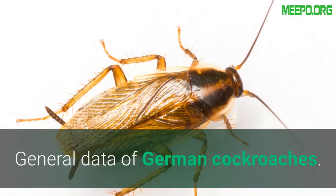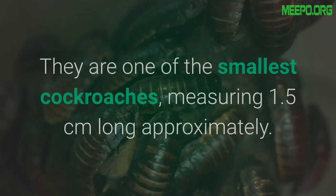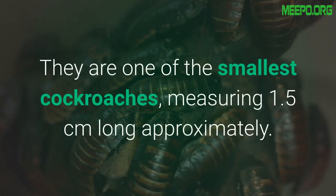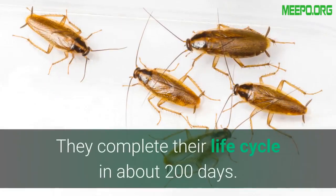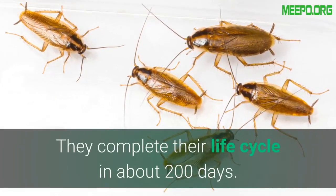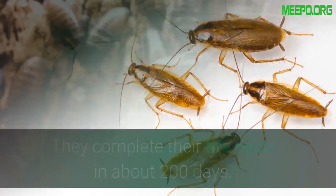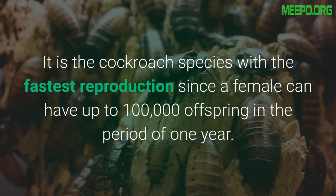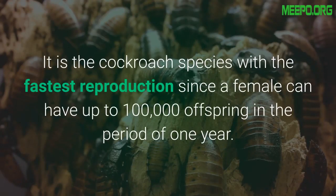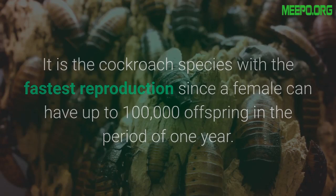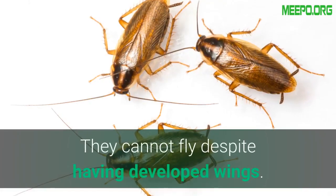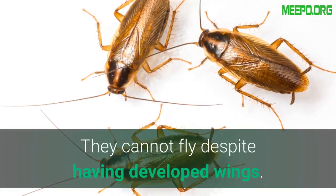General data of German cockroaches: They are one of the smallest cockroaches, measuring approximately 1.5 centimeters long. They complete their life cycle in about 200 days. It is the cockroach species with the fastest reproduction, since a female can have up to 100,000 offspring in the period of one year.